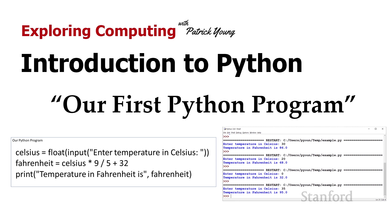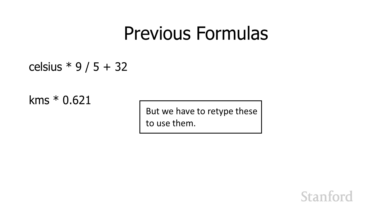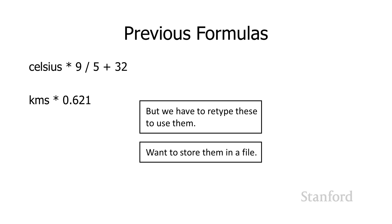In the last video, we saw how we could use the Python shell as basically a super calculator. We played around with a bunch of different formulas, like Celsius times 9 divided by 5 plus 32, or kilometers times 0.621. But the way we were doing it, we had a problem because we need to retype these formulas every time we want to use them. In order to turn these into programs, we need to store them into a file and be able to reuse them whenever we want.